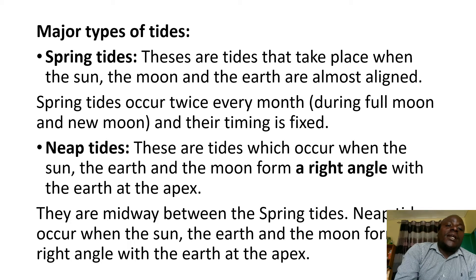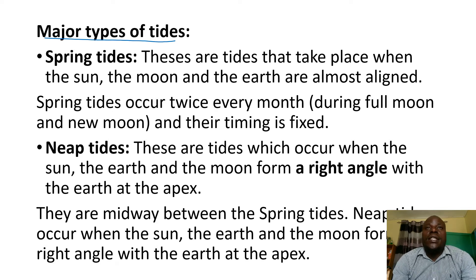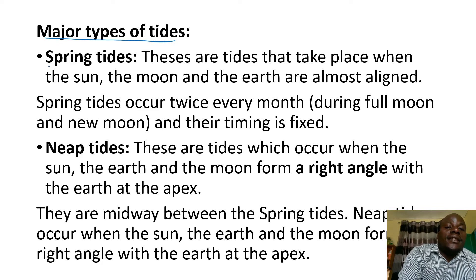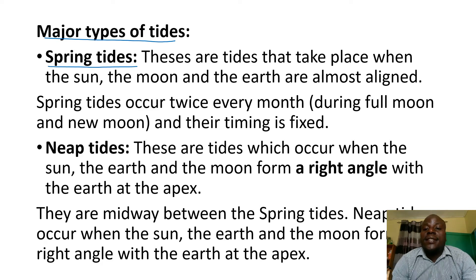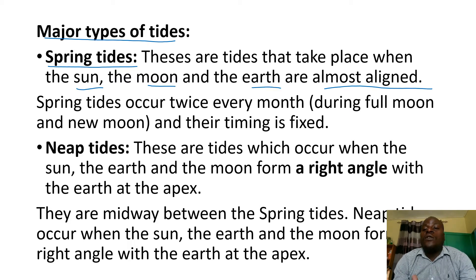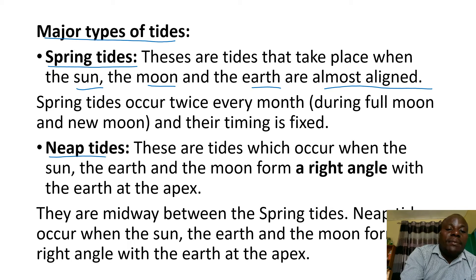Let us look at types of tides. For you to understand these very quickly, you need to base on the positions of the three bodies: the earth, the moon, and the sun. When the sun, the moon, and the earth are almost in a straight line, we have spring tides.